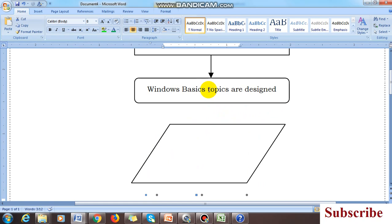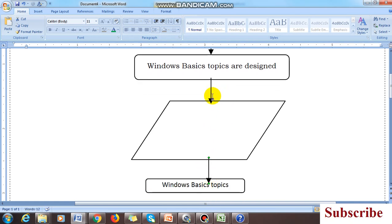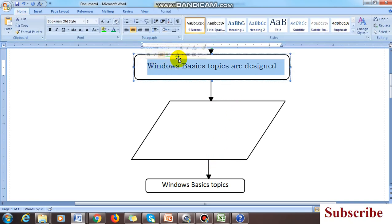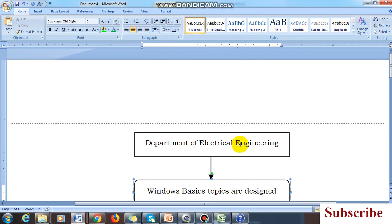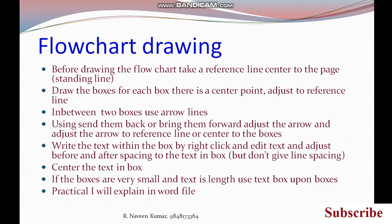If the boxes are very small, use text boxes and copy-paste like this. Send both lines to back. This is how you draw the diagram — draw the flowchart and label it. The labeling should be centered to the top and bottom, and centered to the left and right. Watch both the previous and present videos to understand how to draw a flowchart in a professional way.